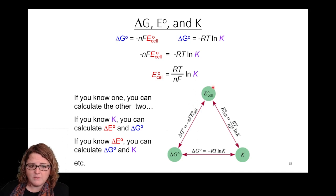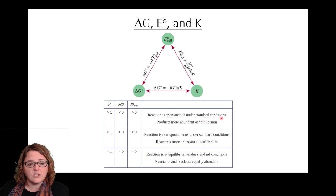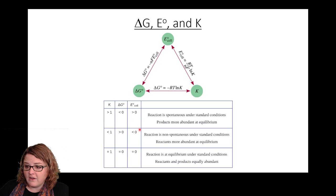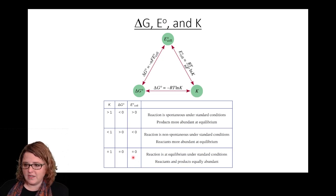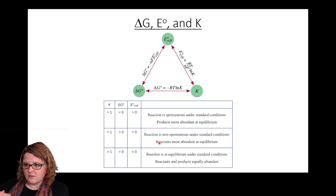The bigger takeaway is what the signs tell us. If E° is positive, ΔG° is negative, the reaction is spontaneous under standard conditions, and products are favored — the equilibrium constant will be greater than one. If ΔG° is positive and E° is negative, reactants are favored and the equilibrium constant will be less than one. If E° and ΔG° are close to zero, products and reactants are roughly equally favored — you won't expect a huge surplus of either at equilibrium.